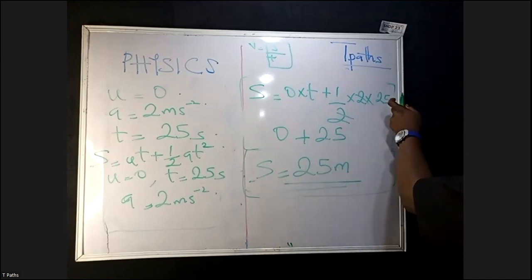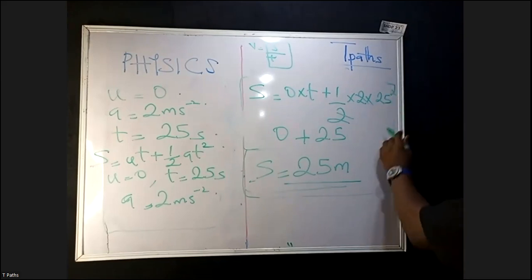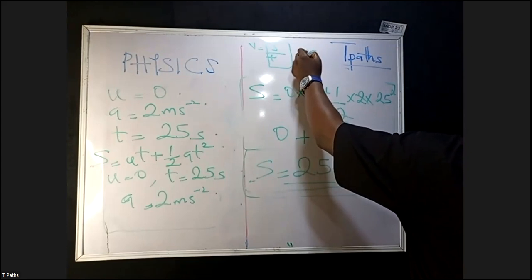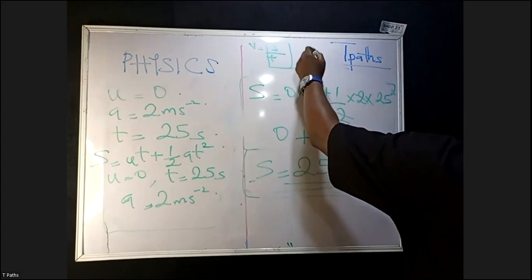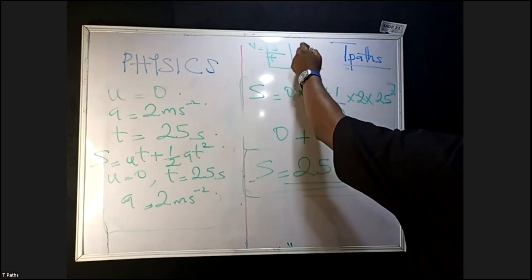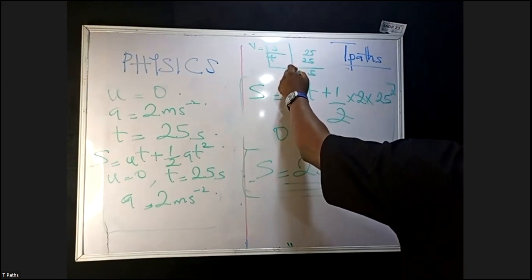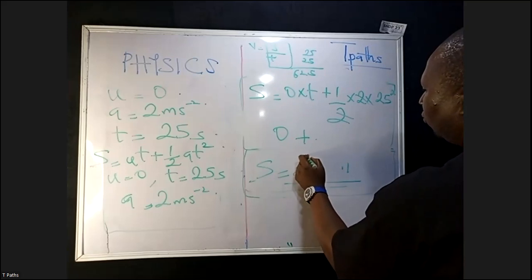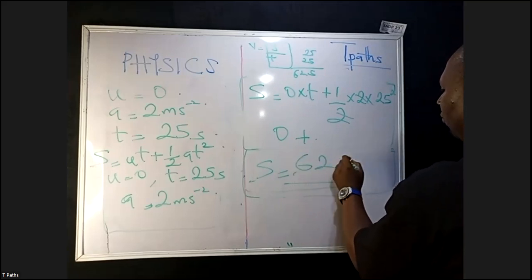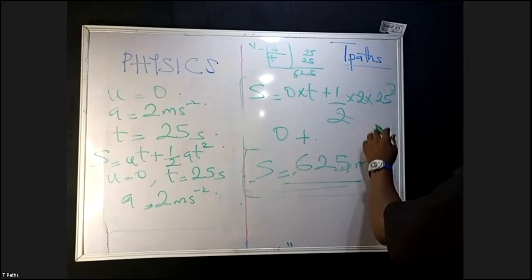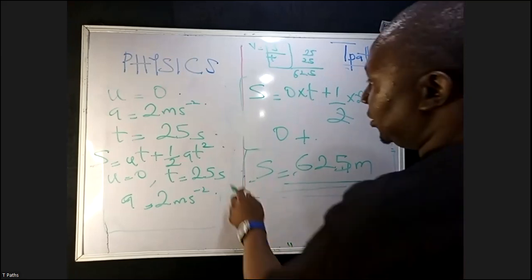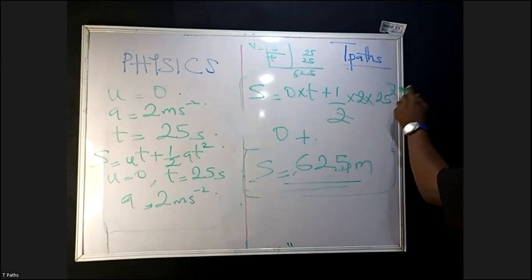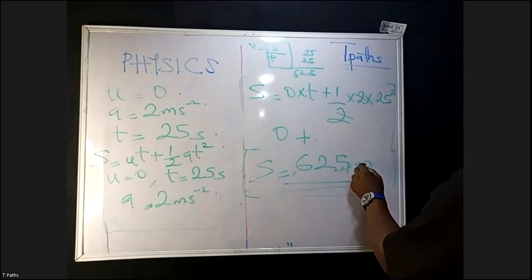Wait — we have 25 squared. 25 squared is 625. So S = 0 + ½ × 2 × 625 = 625 meters. The two cancels with the half, 25 squared gives 625 meters.